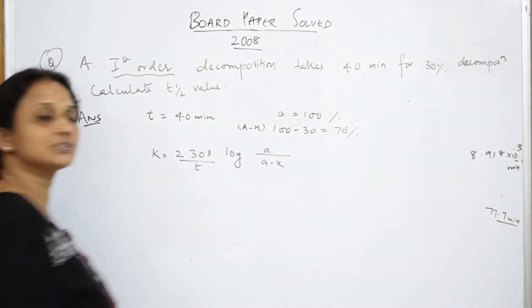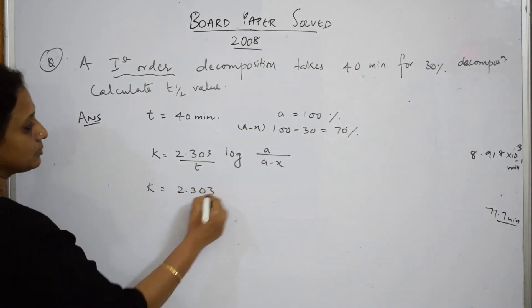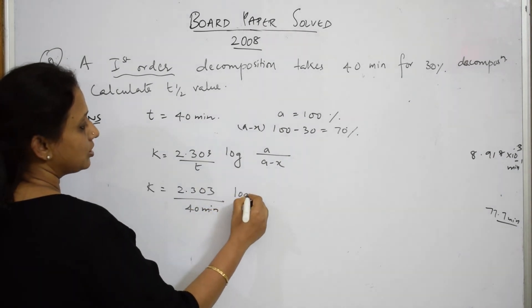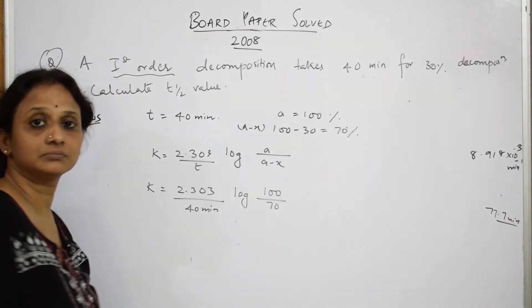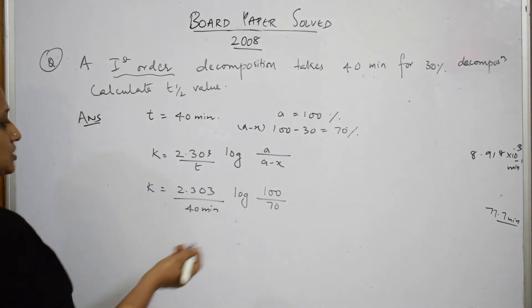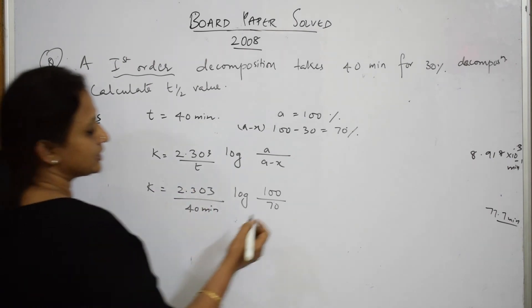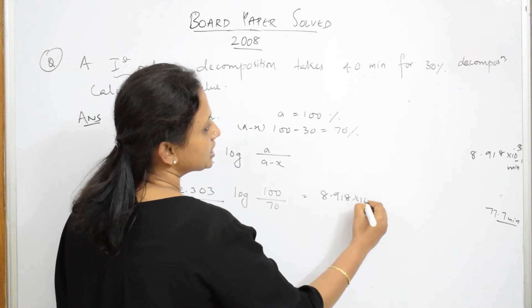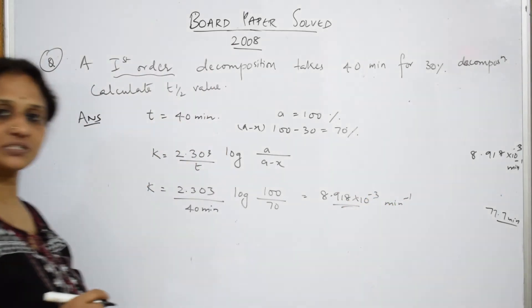Now substitute the values. k is equal to 2.303 by 40 minutes and log 100 by 70. When you solve this, you get an answer of 8.918 into 10 base power of minus 3 minute inverse.